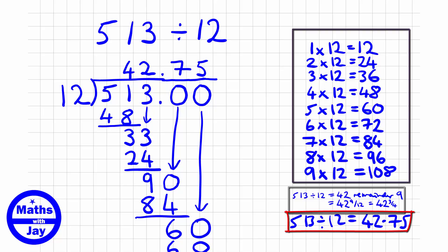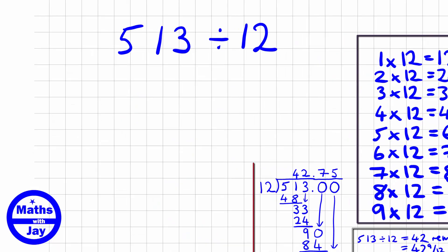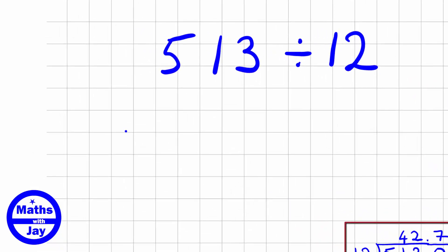So with this method it's called long division because it goes a long way down the page. We could do the same sort of calculation that would have the same numbers, but we can write it out in a much shorter way. So let's have a look at how that will work. So we start off in exactly the same way as before. So we're going to be dividing 12 into 513.